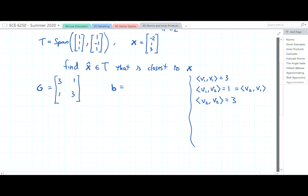And then for b, we need to find ⟨x,v₁⟩. So that's going to be -2 plus 1 is -1 plus 3 is 2. And ⟨x,v₂⟩ is going to be -2 times 1 would be -2 plus 1 times -1, that takes us to -3, and then 1 times 3 is 3. So when we add those up, we get 0. So this is going to be [2,0].